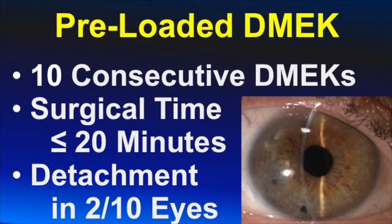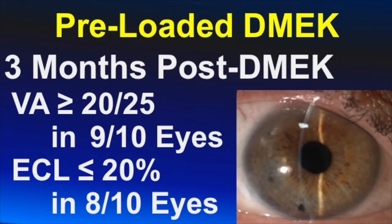Postoperatively, graft detachment occurred in two cases and was managed successfully by air refilling of the anterior chamber. Three months after DMEK, nine of ten patients could see 20/25 or better and endothelial cell loss was below 20% in eight of ten eyes.